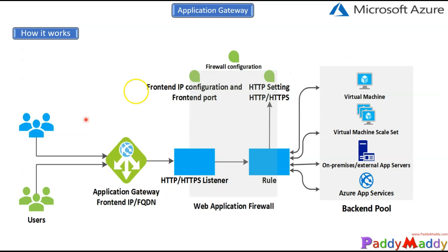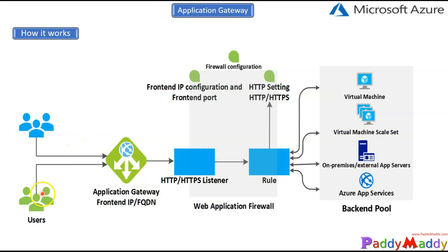Looking at the architecture diagram, here is how Application Gateway works. When a user browses to the application, they first resolve the FQDN to an IP address — the front-end IP address of the Application Gateway — via Azure DNS or another DNS server. The DNS gives the IP address to the client, and Application Gateway then accepts the incoming traffic.